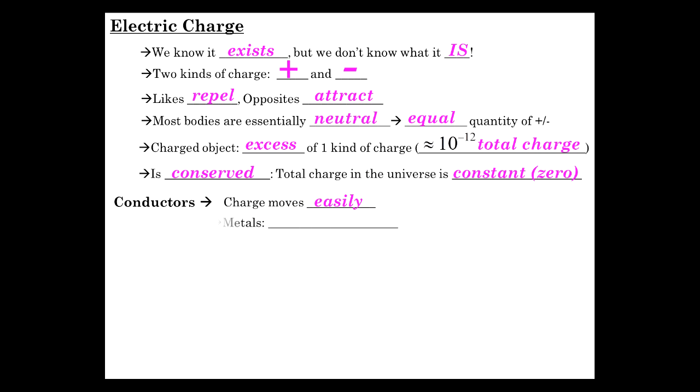Now, conductors, charges are able to move easily. Metals, for instance, they have free electrons that enable the negative charge carriers to move around the matrix, the object itself. So, those charges can freely move. In solutions, we have ions that are responsible for carrying the charge. Plus and minus ions.